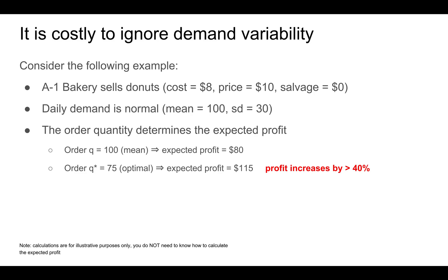In a previous lecture, we had discussed the news vendor problem. The news vendor problem shows us that it is costly to ignore demand variability. Let's consider this example where we are considering a bakery which sells donuts. Suppose the cost is $8, the selling price is $10, and the salvage value is 0. The daily demand is normal with a mean of 100 and a standard deviation of 30. The news vendor model tells us that the order quantity determines the expected profits.